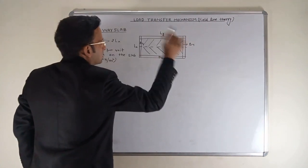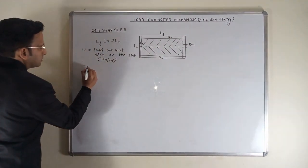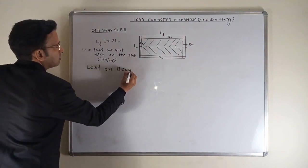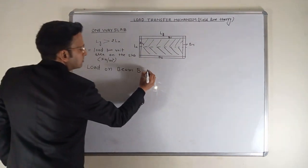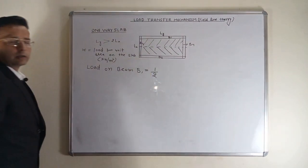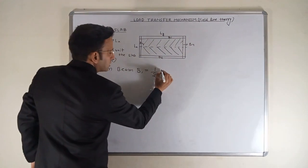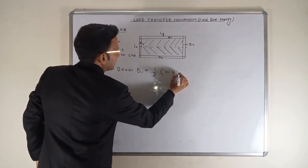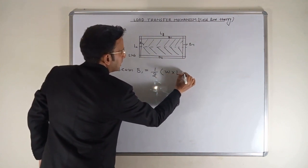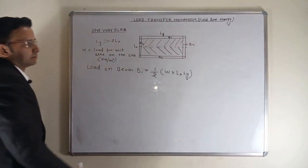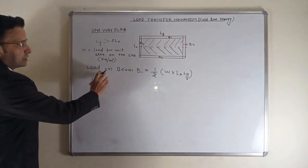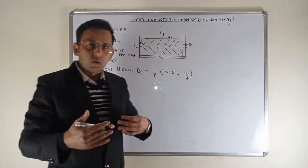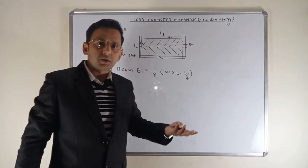All the load is transferred to the larger dimension of the slab and all the load of the slab will be transferred equally on beam B1 and beam B2. So load on beam B1 is equal to half of total load on this slab. What is total load on this slab? W is load per unit area multiplied by its area Lx and Ly. This is the total load on beam B1.